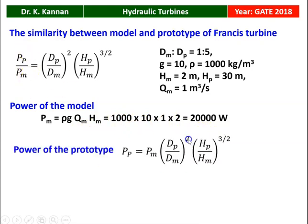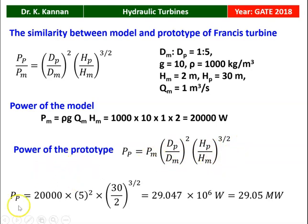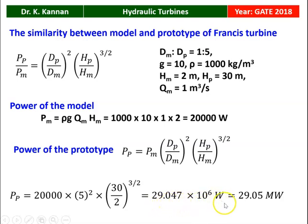Now substituting into the equation, power of prototype equals power of model multiplied by (D_P/D_M)² multiplied by (H_P/H_M)^(3/2). Substituting: 20,000 × 5² × (30/2)^(3/2) = 29.047 × 10⁶ watts, which equals 29.05 megawatt. That is the answer to the problem.